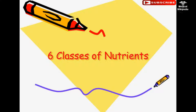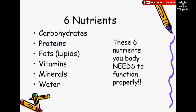The 6 Classes of Nutrients are: Carbohydrates, Proteins, Fats/Lipids, Vitamins, Minerals, and Water. These 6 nutrients are what your body needs to function properly.